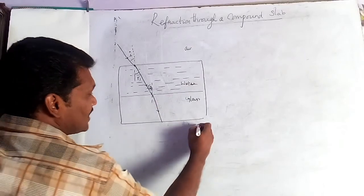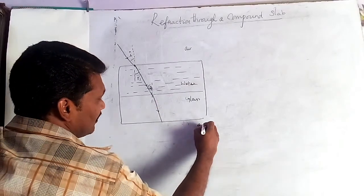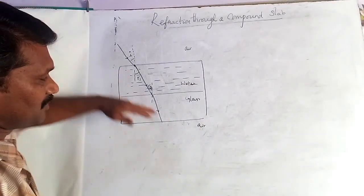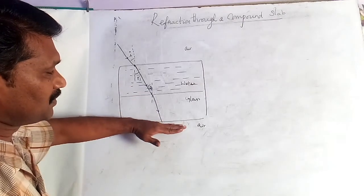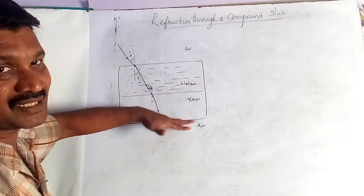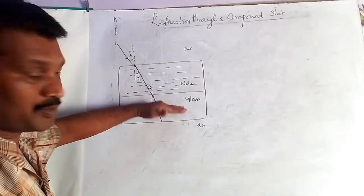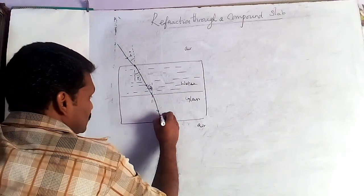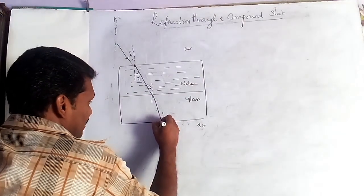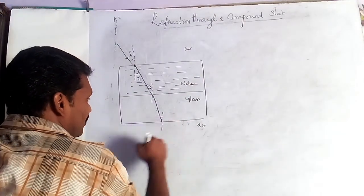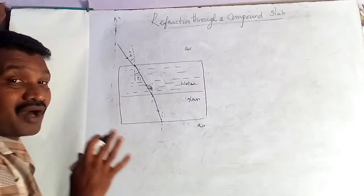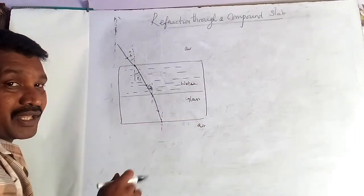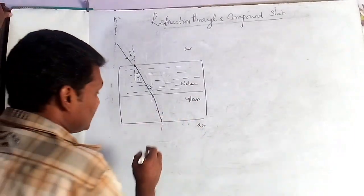Now consider the glass and air interface. There is a medium of separation between glass and air. Glass is a denser medium, but air is a rarer medium. So here you can draw the normal, and the ray goes away from the normal, because glass is denser but air is rarer.